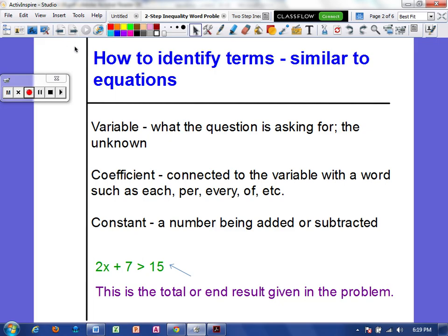So identifying terms is very similar to equations. The variable, coefficient, and constant will all be identified the same way. And the total or end result will still be on the right of our inequality symbol.